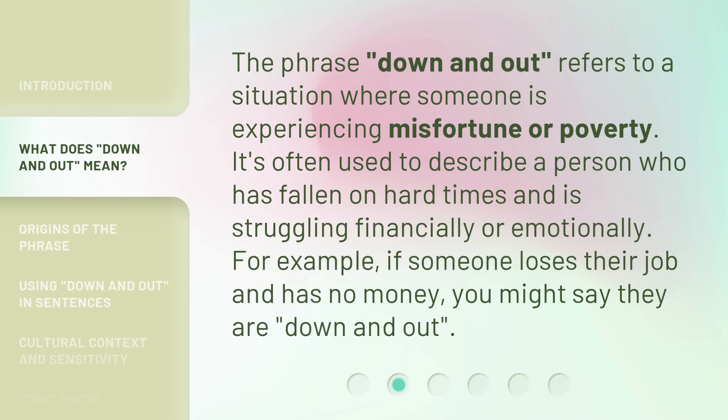The phrase 'down and out' refers to a situation where someone is experiencing misfortune or poverty. It's often used to describe a person who has fallen on hard times and is struggling financially or emotionally. For example, if someone loses their job and has no money, you might say they are down and out.